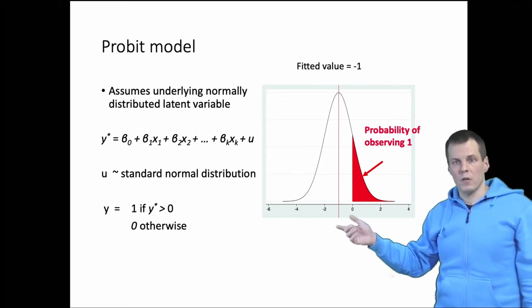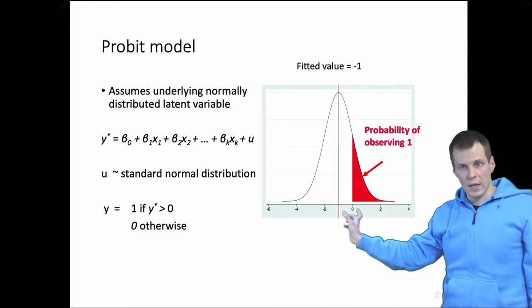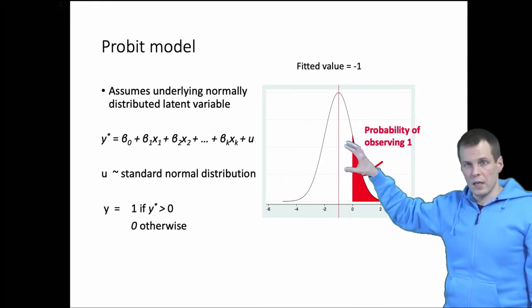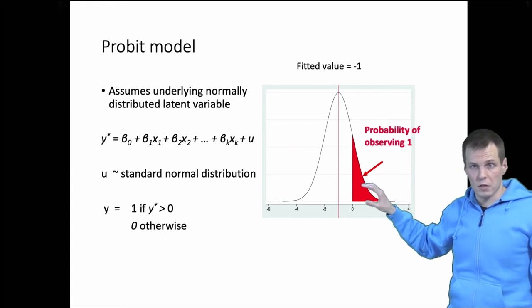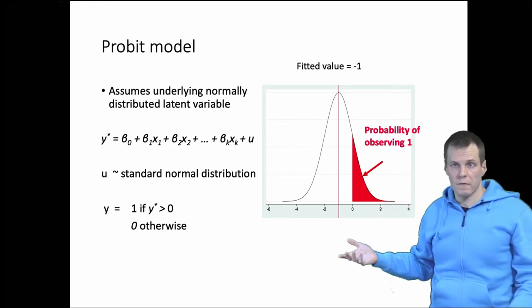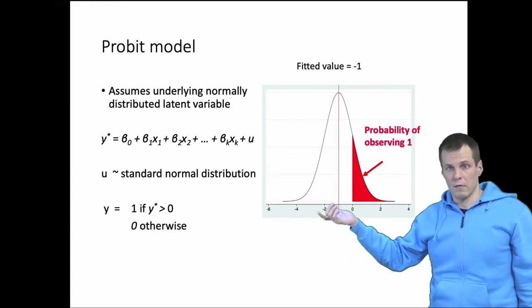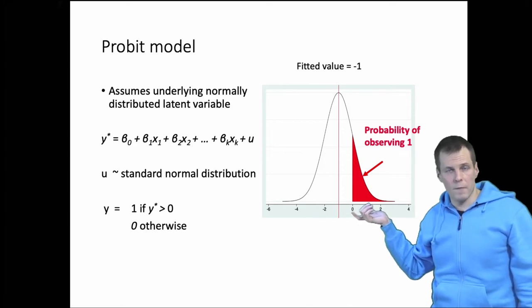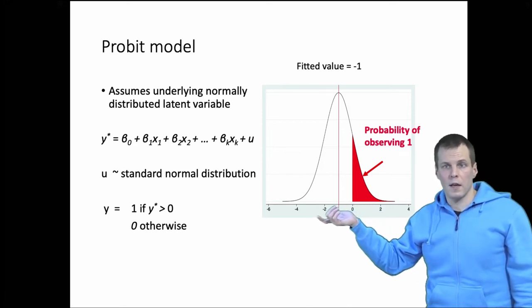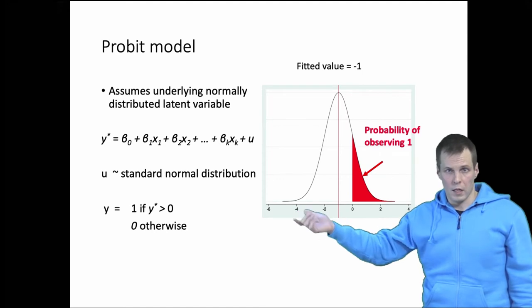So when the fitted value increases, this distribution shifts right and we can see that the area here would increase as well for that observation. So the probability of observing a positive value would increase if we increase the fitted value. The same way, if we decrease the fitted value, then the probability of observing 1 decreases.